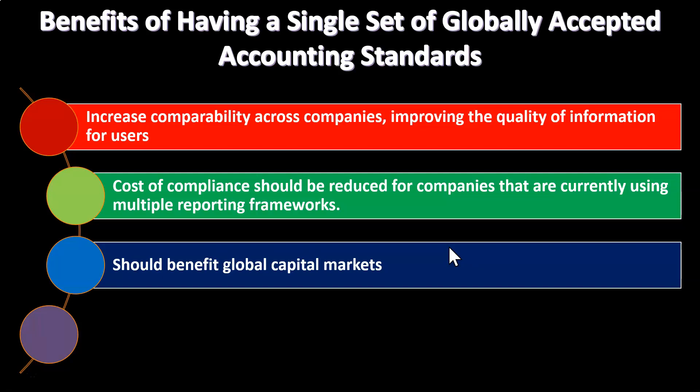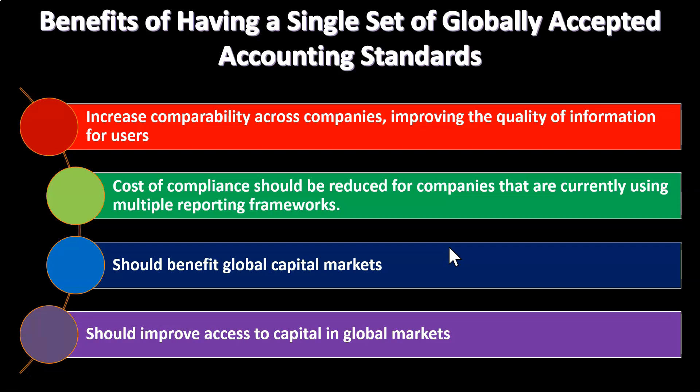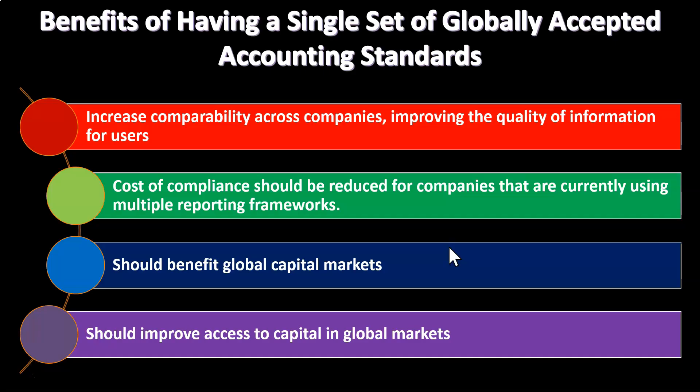A single global standard should benefit global capital markets and improve access to capital. If everybody could agree on and implement standards without concern about bias toward one place or another, and we all had one set of standards, then business and economics overall would benefit — with fewer barriers, lower costs, more transparency, and more information for everybody. That would increase market activity in general.